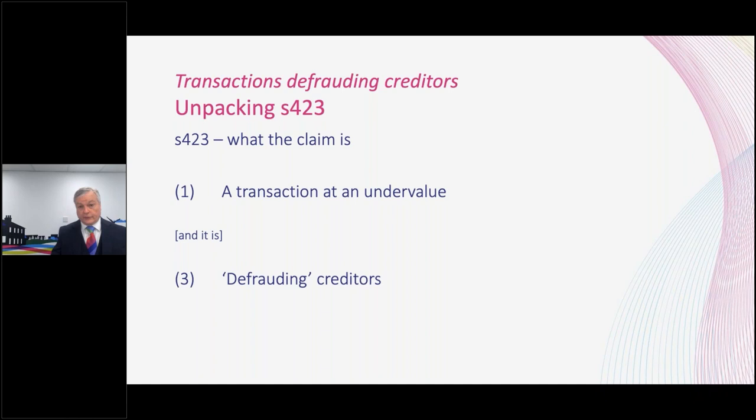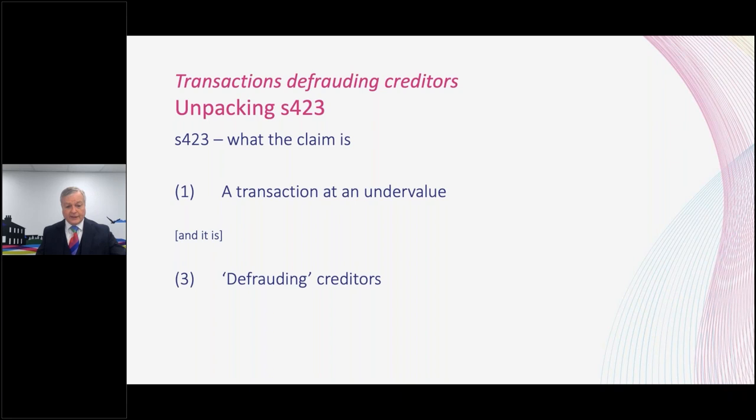A Section 423 claim has two components: a transaction at an undervalue, and that transaction must be defrauding creditors. 'Defrauding' is in quotes here because the legislation doesn't actually say anything about defrauding creditors. That's the title to the section, but there's nothing at all about fraud, honesty, or dishonesty in the legislation itself. So the title to Section 423 is perhaps a little bit misleading.